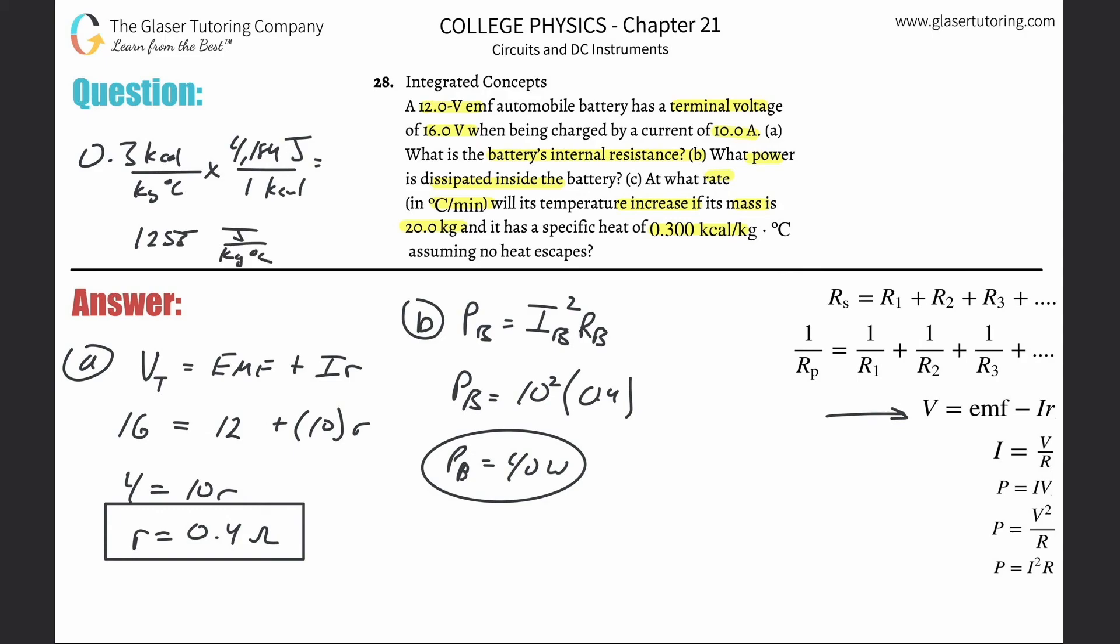If they're giving me specific heat and mass, I should be thinking about this formula: Q equals m c delta T.